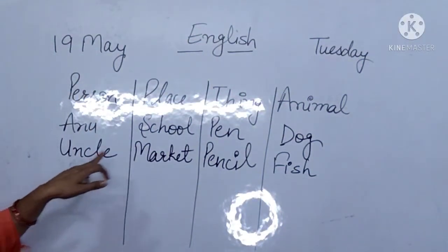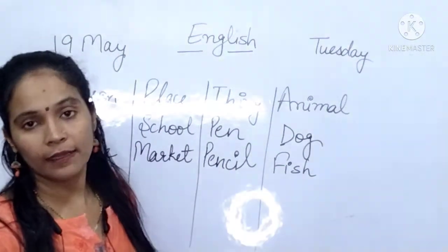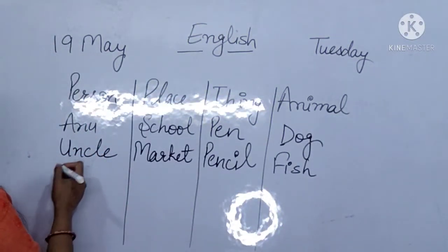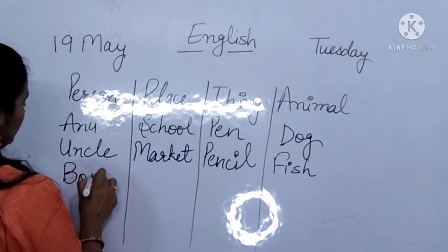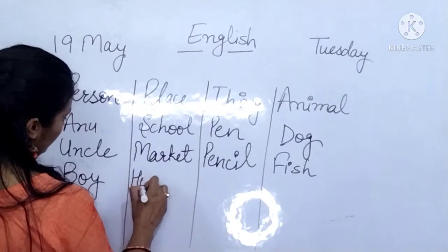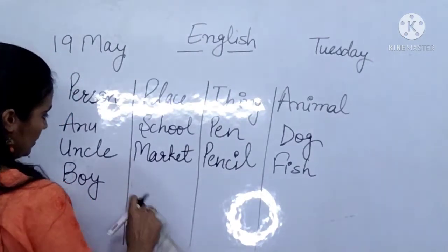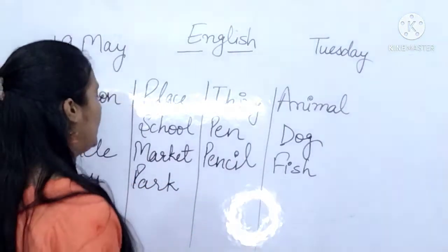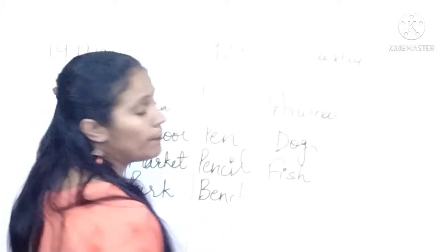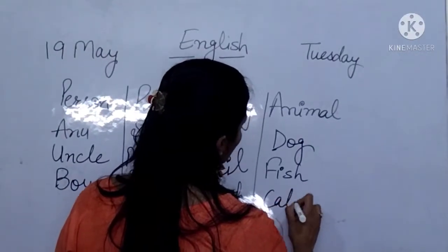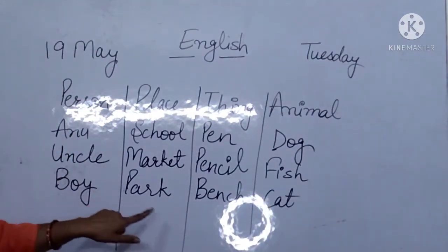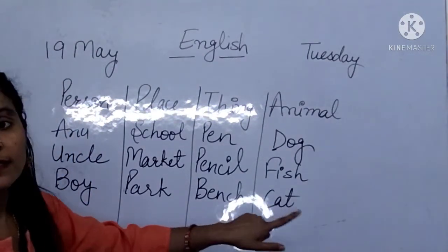Person, place, thing, and animal. Now next is boy — park — bench — cat. Cat is an animal. So: boy, park, bench, cat.